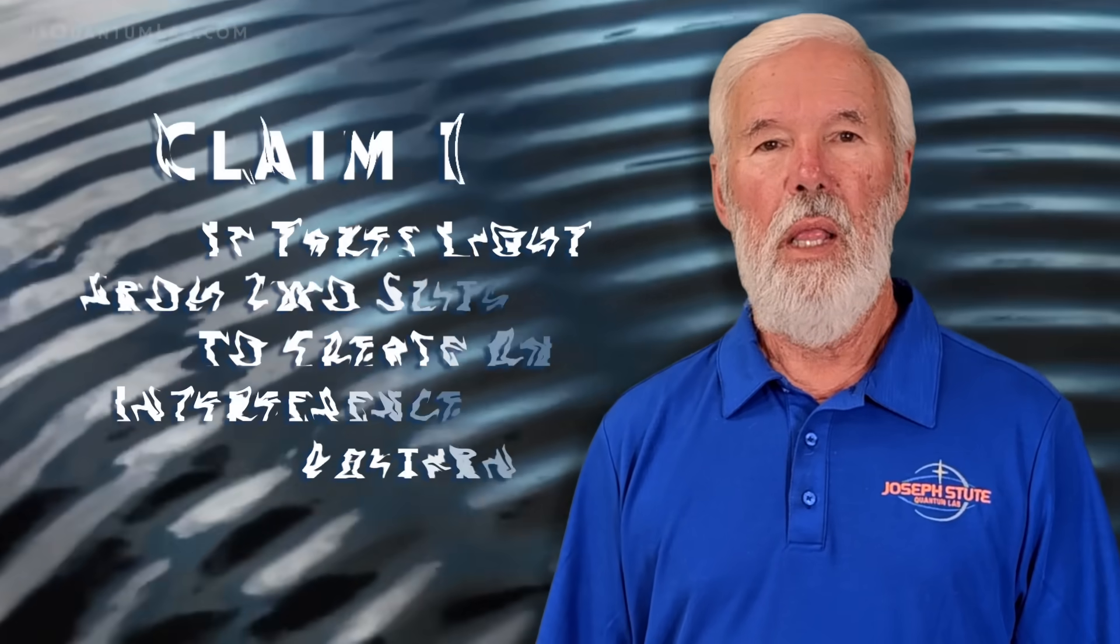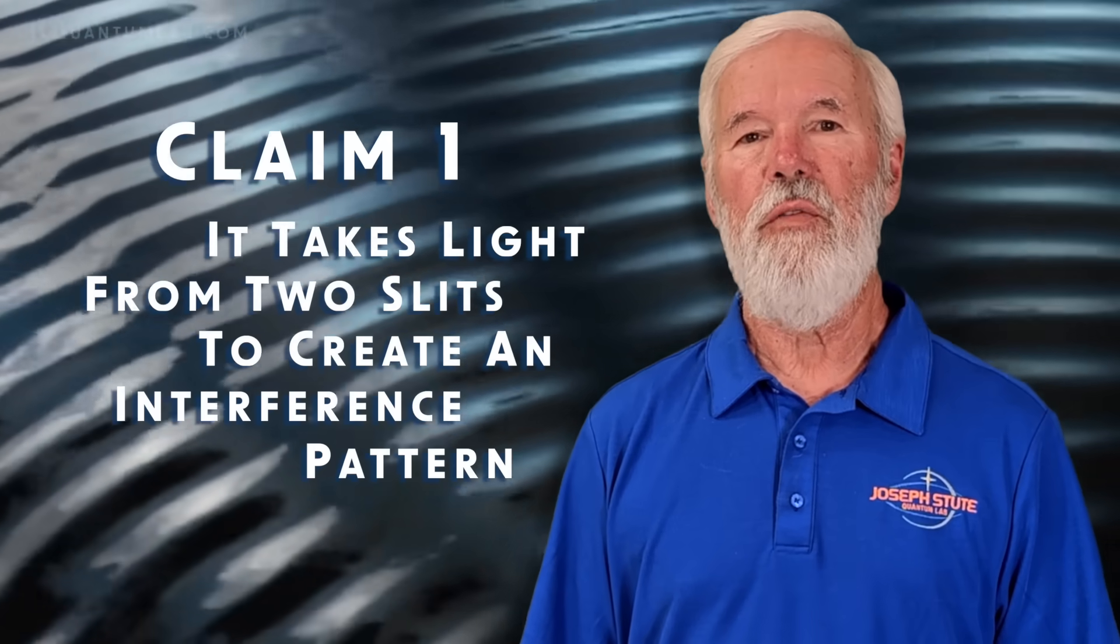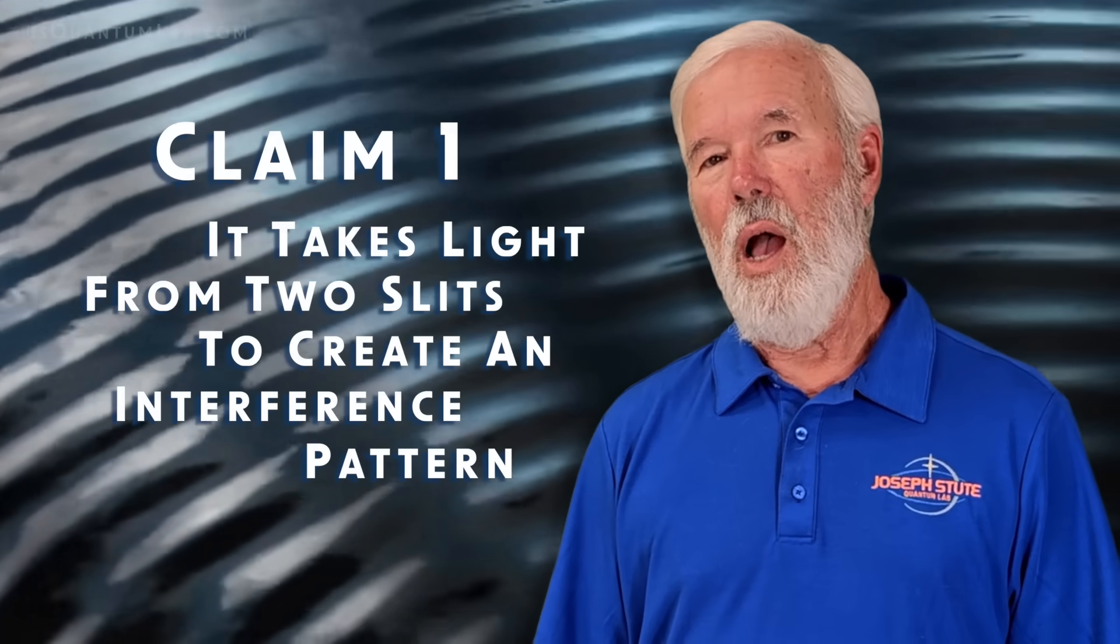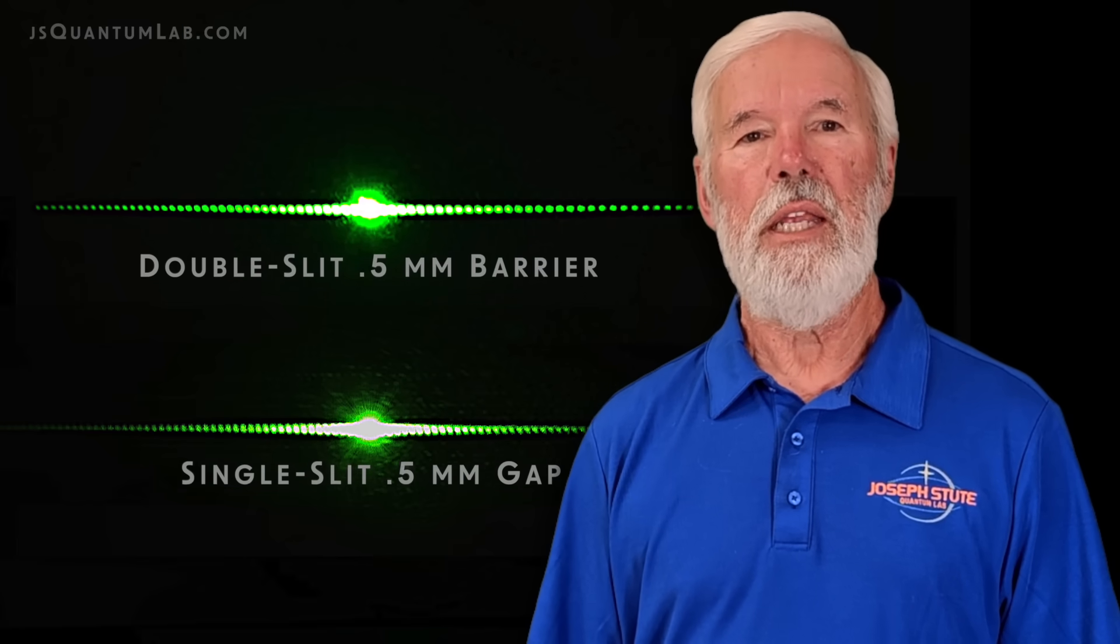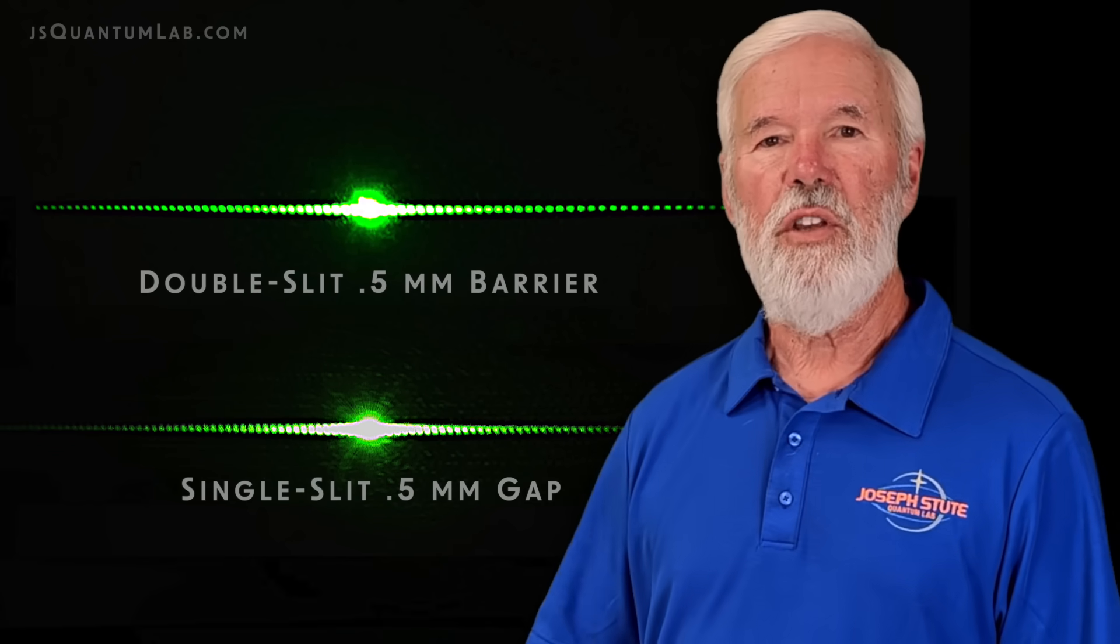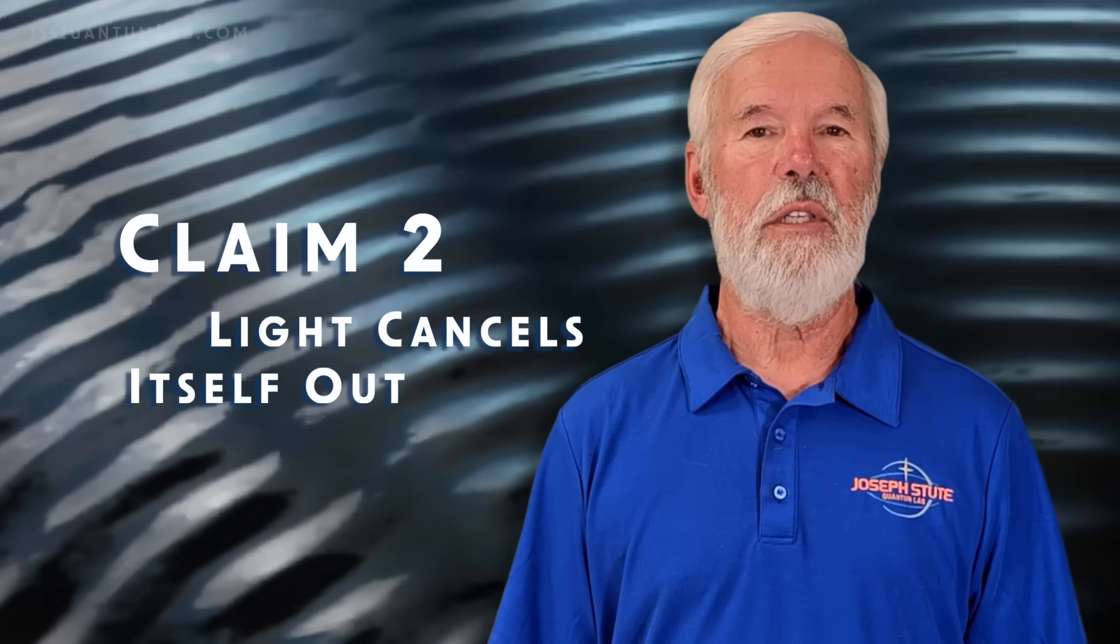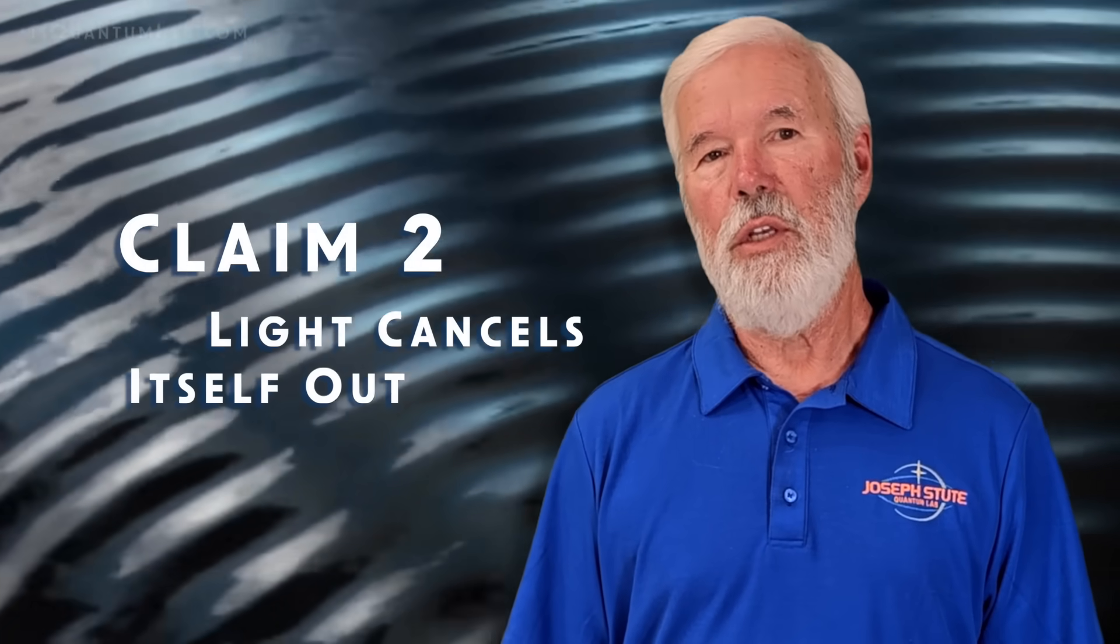Veritasium used water waves to validate their two claims about light. Claim number one. They say it takes light from two slits to create an interference pattern. I countered that claim with my single slit laser experiment. The single slit pattern looks just like the double slit pattern. Claim number two. They say light cancels itself out. Using two lasers, anyone can see photons do not interact with each other.